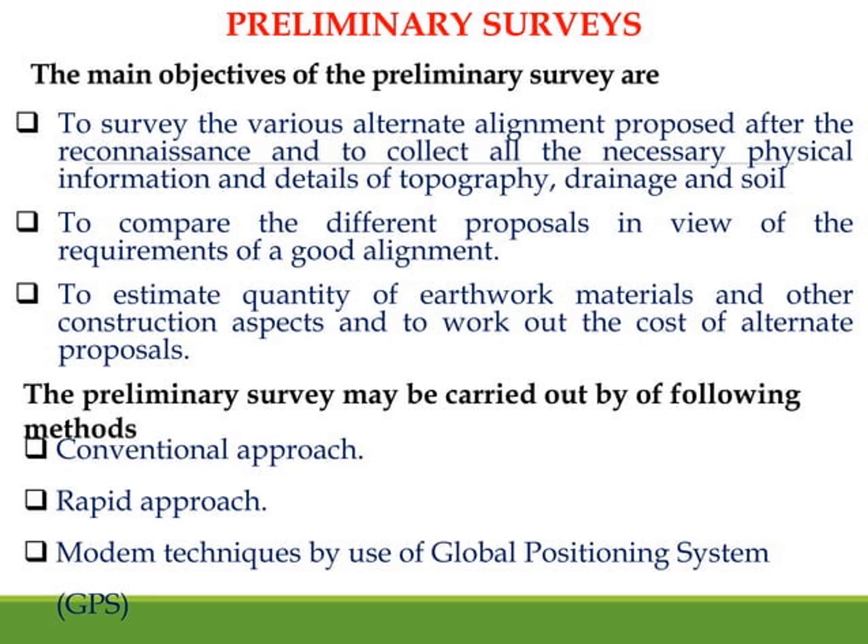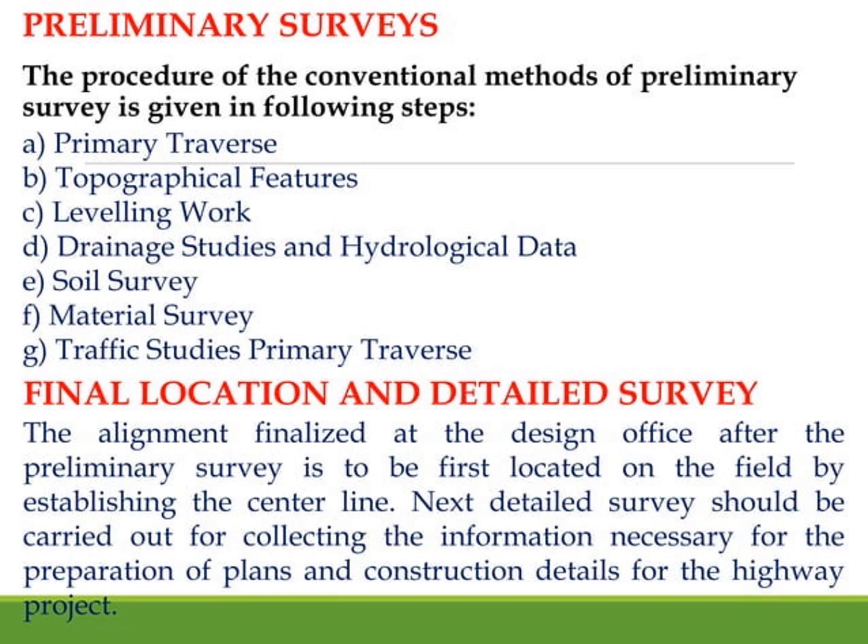Conventional means we use theodolite. Rapid means we use total stations. Modern means we use GPS surveying. In preliminary survey, we collect physical information and details of topography, drainage, and soil. The things collected include: topographical features such as valleys and hills, leveling work, drainage studies, hydrological data, soil survey, material survey, and traffic studies.